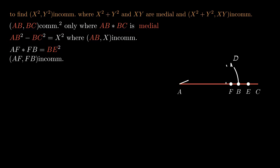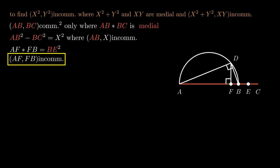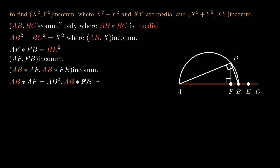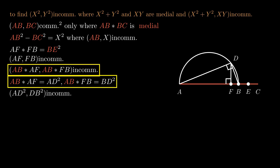Now draw the semicircle on ab so that the right triangle adb can be made. af and fb are incommensurable, so ab times af and ab times fb are incommensurable. By the lemma of Proposition 10.33, ab times af is equal to ad squared, and ab times fb is equal to bd squared, so ad squared and bd squared are incommensurable.